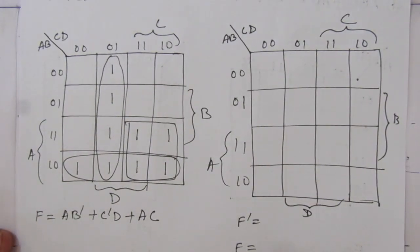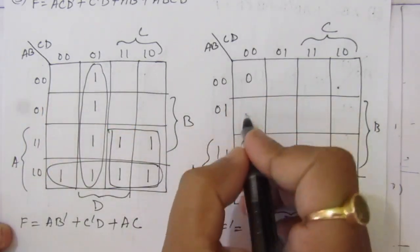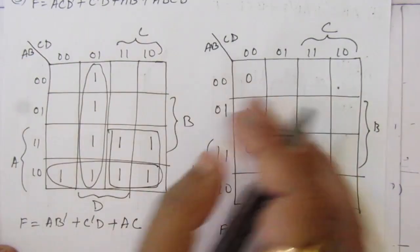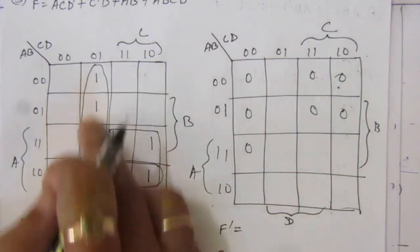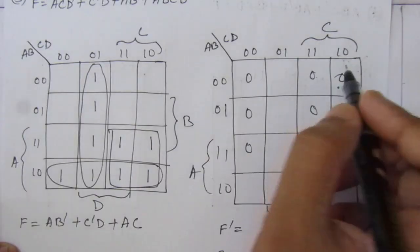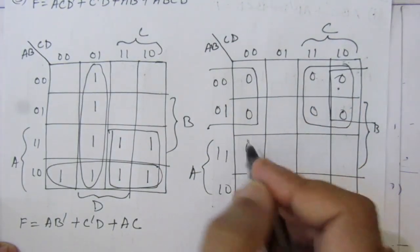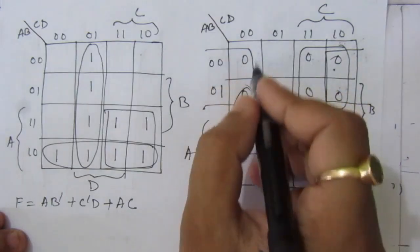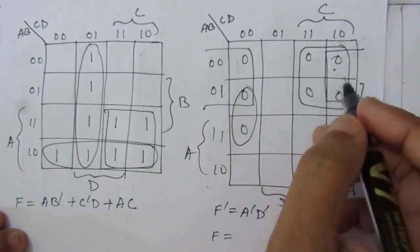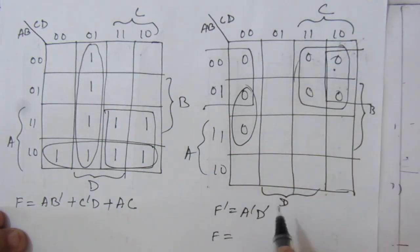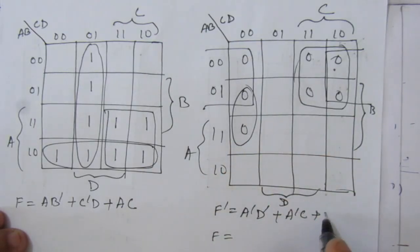Now we have to find the product of sum expression. For finding the POS expression we have to fill the table with zero values. Looking at the K-map, these three cells have zero values, then we have zero, zero, zero — because the function is the same for both tables — and then we have zero, zero, zero, zero for the remaining unfilled cells, and these two also.